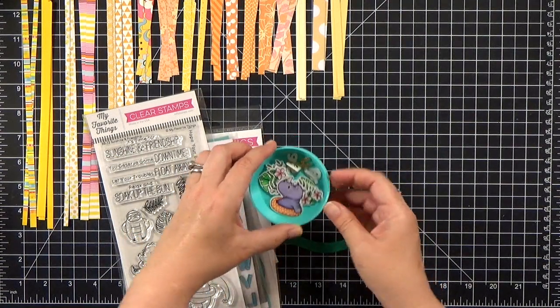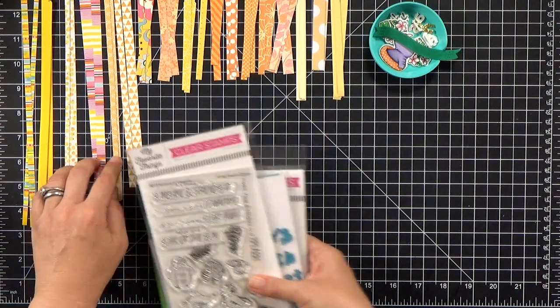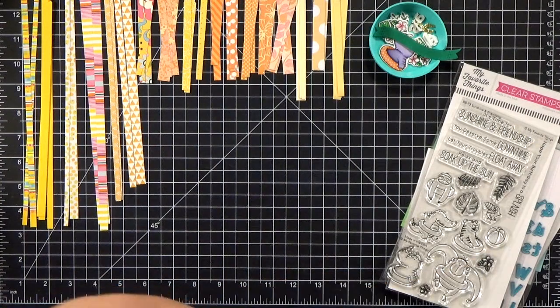So I decided to make a scene, a swimming pool scene, and this is going to be a birthday card. Now for all of the strips, I just grabbed my yellow and orange scrap stash and then cut a bunch of strips.